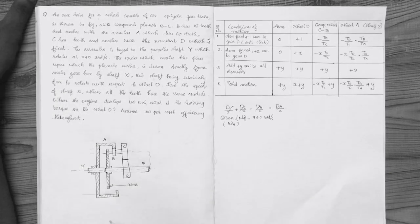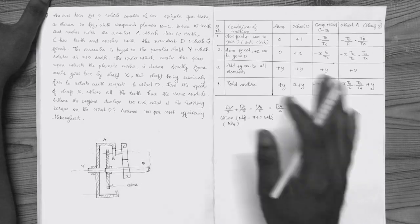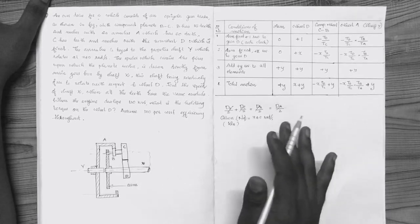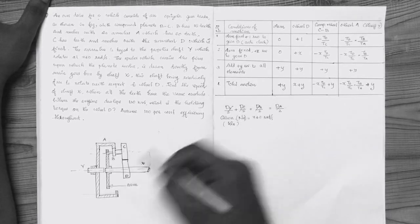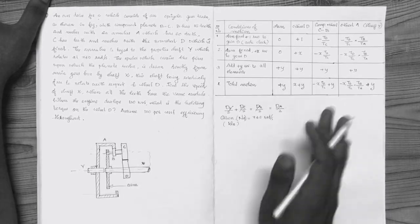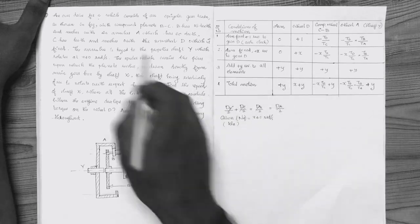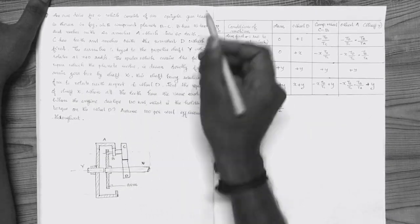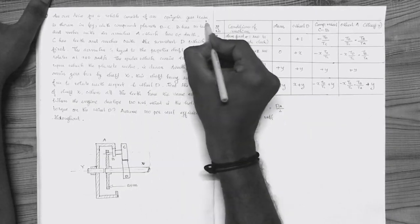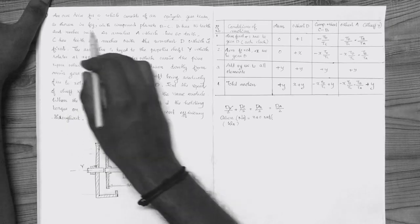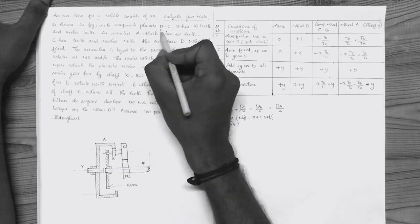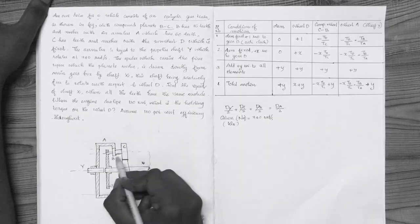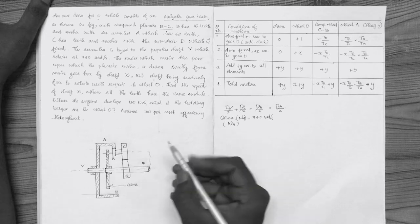I will explain the flow. This is an epicyclic gear train. This is a compound gear BC. This is a compound gear.